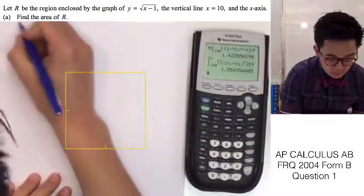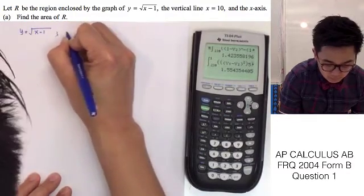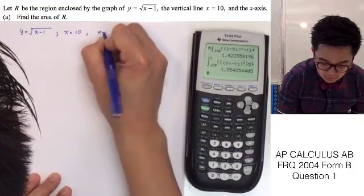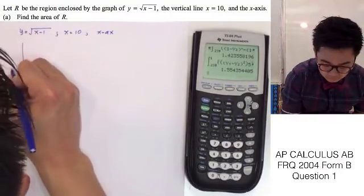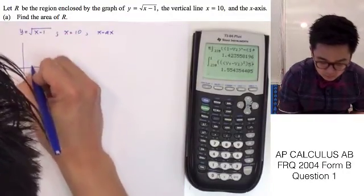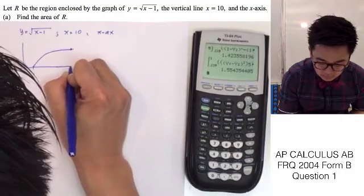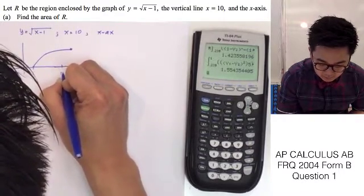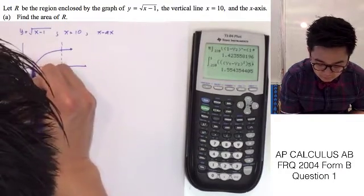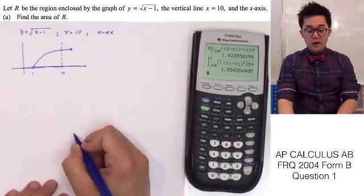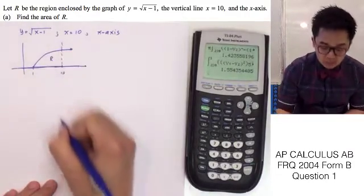So if we're going to write out the given function: y equals square root of x minus 1, x is equal to 10, and the x-axis. If we visualize the graph of R, the graph of square root of x minus 1 looks like this. Let's extend our x-axis up until 10, so the bounded region will be x equal to 10, and the x-axis, which is y equal to 0. This is our bounded region.